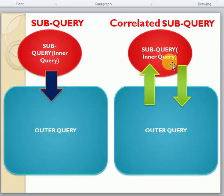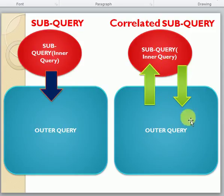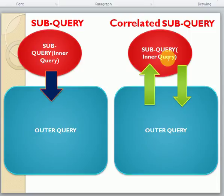In a correlated subquery, there is a relationship between your outer query and inner query — that is a join condition. You can identify it in the WHERE clause of your inner query: some column from the outer query's table will be joined in the inner query's WHERE clause. So every record, the subquery will be executed and that record will be matched with your outer query. It goes record by record, validating the condition one by one — that is called a correlated subquery.